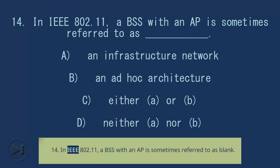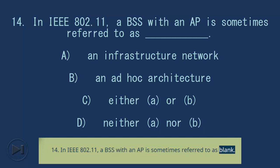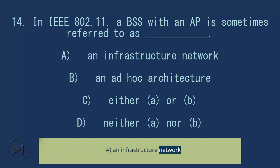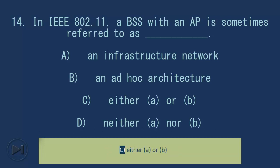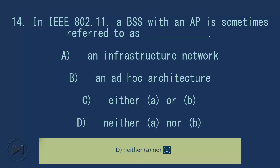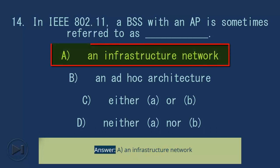Question 14: In IEEE 802.11, a BSS with an AP is sometimes referred to as blank. A. An Infrastructure Network, B. An Ad Hoc Architecture, C. Either A or B, D. Neither A nor B. Answer: A. An Infrastructure Network.